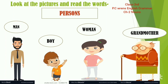Persons means log. Logo ke naam ko bhi hum noun kehte hain. Let's repeat again: man means aadmi, boy means ladka, women means aurat, grandmother means dadi maan. These are the examples of persons.